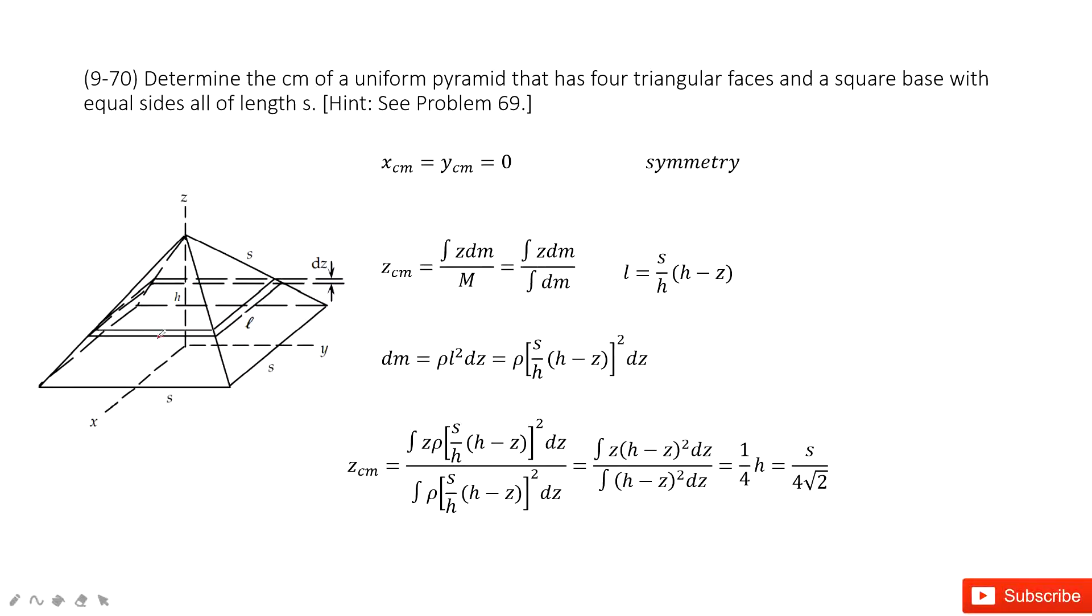Now you can see we can cut this object in the z direction by a lot of ds with thickness dz, and the surface is just a square. When we look at it, we can find the center of mass for x component and the y component is zero because of symmetry.